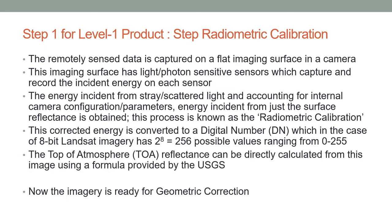This corrected energy is then converted into a digital number, which in the case of 8-bit Landsat imagery has 2 to the 8th, or 256 possible values, ranging from 0 to 255. Zero means total darkness with no signal, and 255 means extremely bright where it is saturating the sensor. The top of atmosphere reflectance can be calculated from this radiometrically calibrated image using a formula provided by the USGS. Once the image is radiometrically calibrated, it is ready for geometric correction.